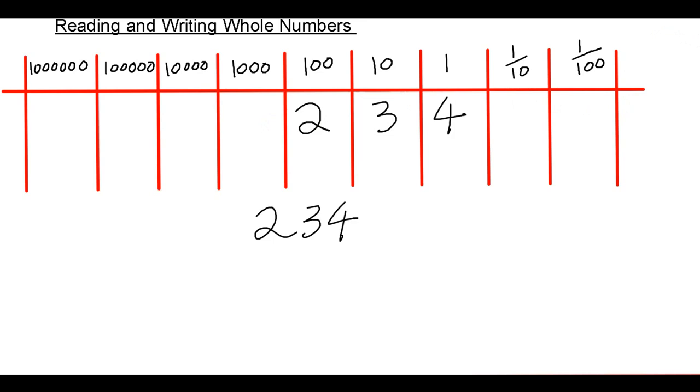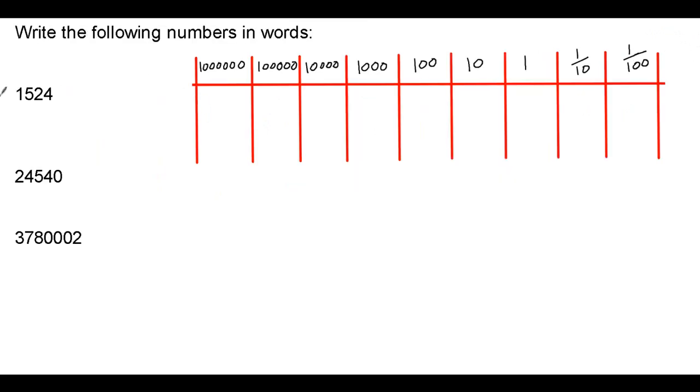So, to start with, we're going to look at writing whole numbers in words. Another way of saying this is going from figures to words. The first example is 1524. So, I've just read it out, because we're often very used to just reading them out. But to put it into my place value grid, I can see that I have 4 in the units column. I've got 4 units, so I'm going to put 4 in my units column.